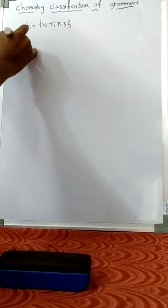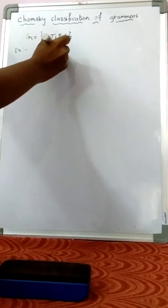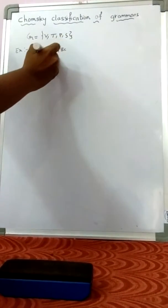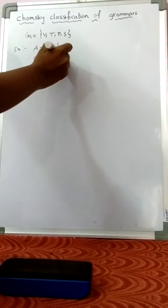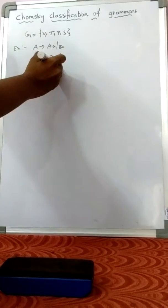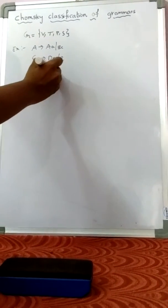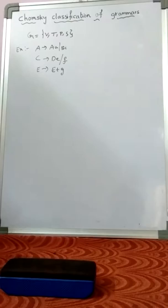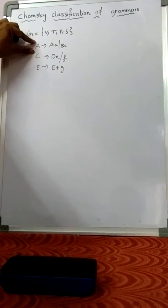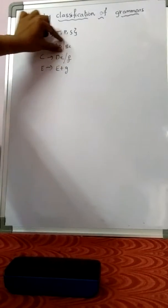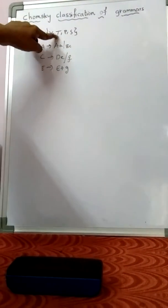For example: A tends to A, A, R, B, C. Next, C tends to D, E, R, F. Either E tends to E plus D. So A is the start symbol. This overall is called a production rule. And T is called a terminal.